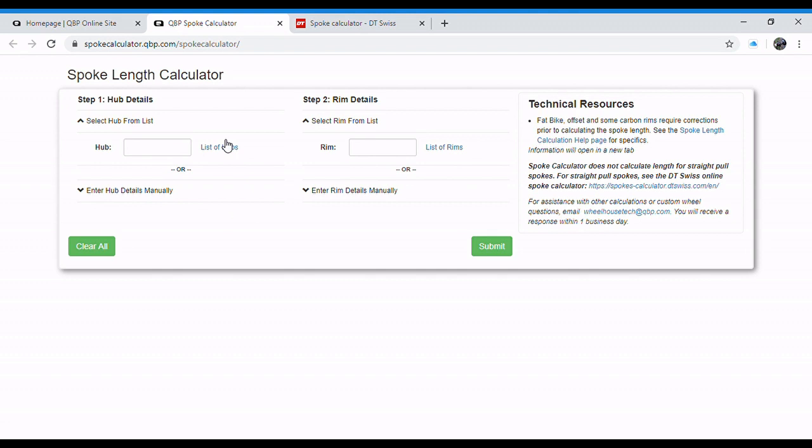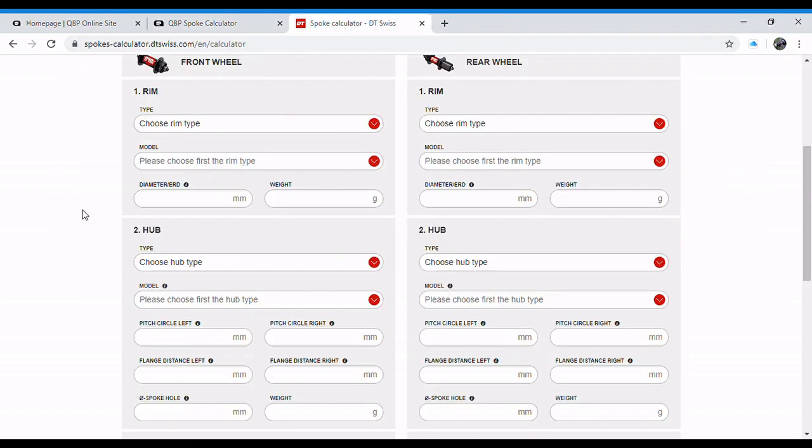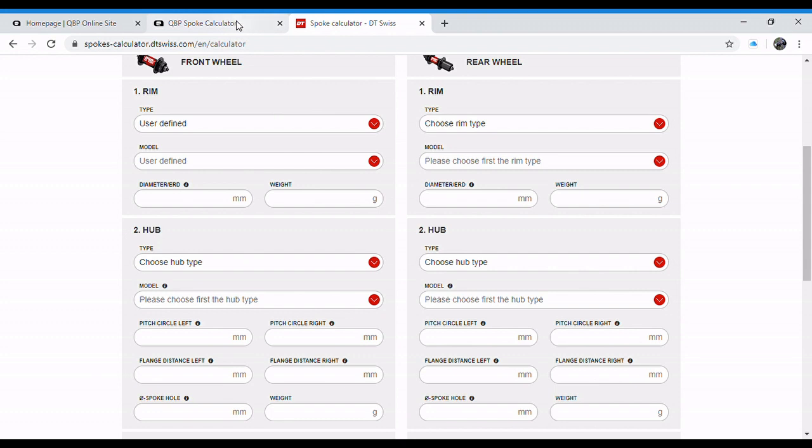Now we need to pull up the spoke calculator. Personally, I like the one from Quality Bike Products. If you don't have a wholesale account with them, DT also makes a nice quality spoke calculator with a lot of similar dimensions. You'll just have to make sure to hit the user defined buttons before you put in any of your info. Back to the QBP one, I like it. It's simple and it works well.